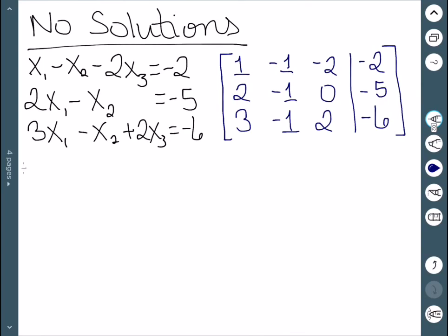Now that we have the augmented matrix, the first step is to get a 1 in the first row, first column, which we can see is already done here. So next, we need to get zeros below that.